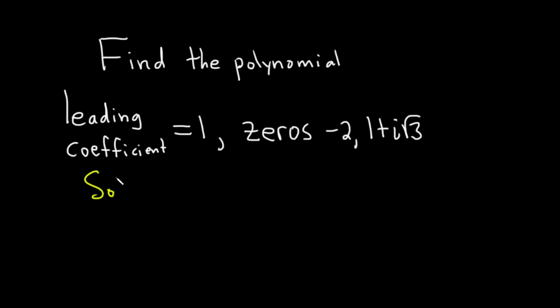Okay, solution. So we know that negative 2 is a zero. That means that x minus negative 2 is a factor, or in other words, x plus 2.